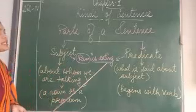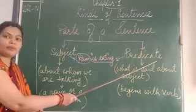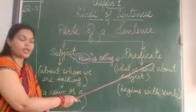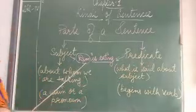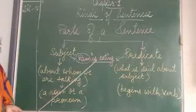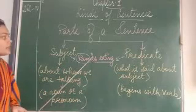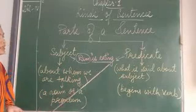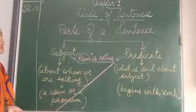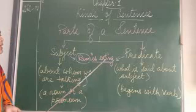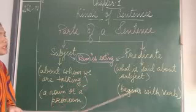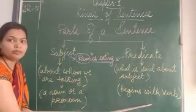And 'is eating' is a predicate. You can see that Ram is a noun, and 'is eating' — this predicate part — it is starting with a verb.